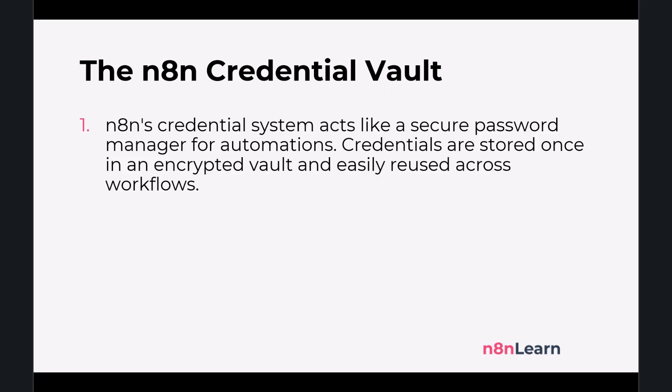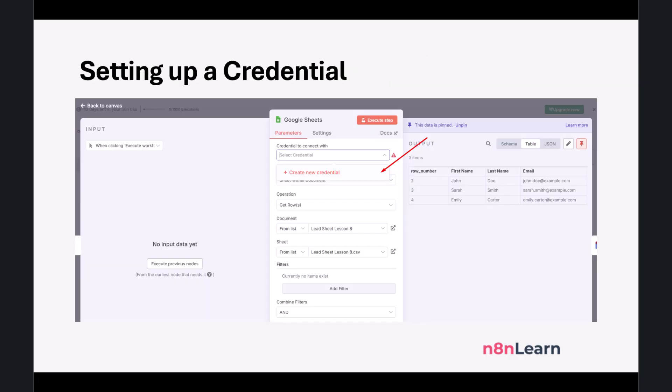The second, more modern and more secure type is OAuth 2. With OAuth 2, you never give N8N your username and password. Instead, when you go to connect your account, N8N redirects you to the service itself — like the Google login page. You log in directly with Google, and Google asks you whether you want to grant N8N permission to do specific things, like read your spreadsheets. The perfect analogy is a valet key: you don't give the parking attendant your master key that opens the trunk and glove box — you give them a limited key that can only start the car and lock the doors. OAuth works the same way: you are delegating limited, specific permissions to N8N without ever sharing your main password. This is why it's the preferred and most secure method for modern applications.